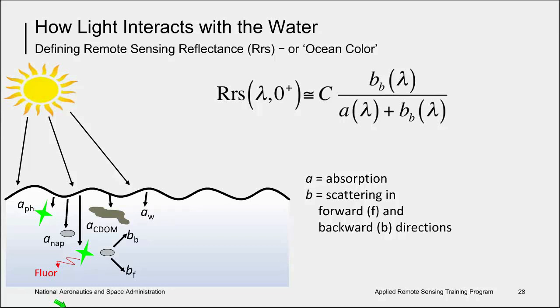In aquatic remote sensing, we are interested in the radiometric unit, the remote sensing reflectance. Remote sensing reflectance is used in ocean color algorithms to compute the data products of interest for ocean and aquatic science, like the chlorophyll A concentration. Remote sensing reflectance can be defined as the ratio of backscattering to the total absorption and backscattering as affected by the local sun and sky conditions.